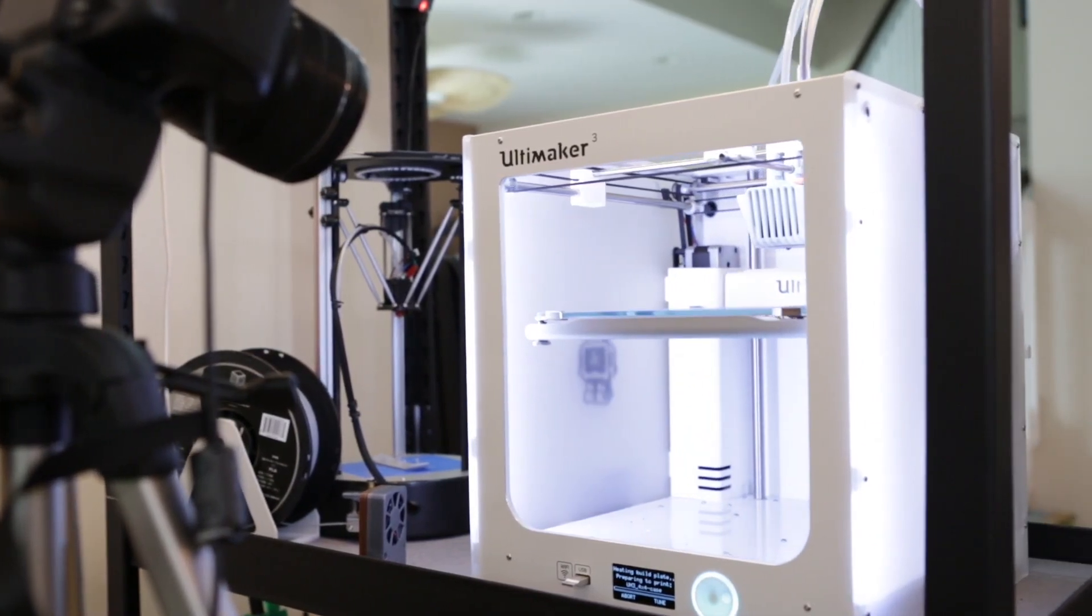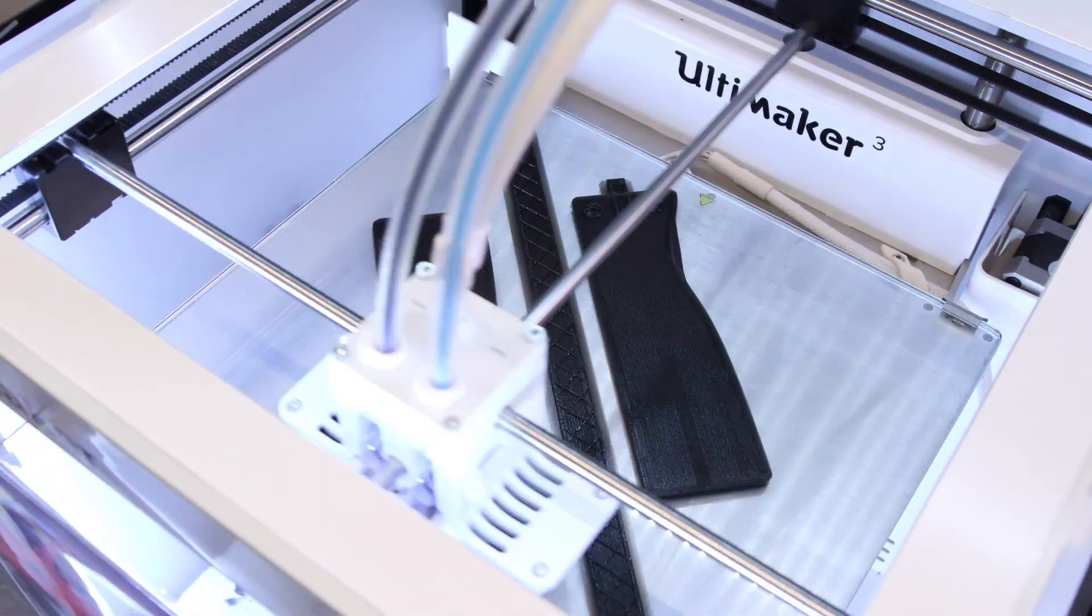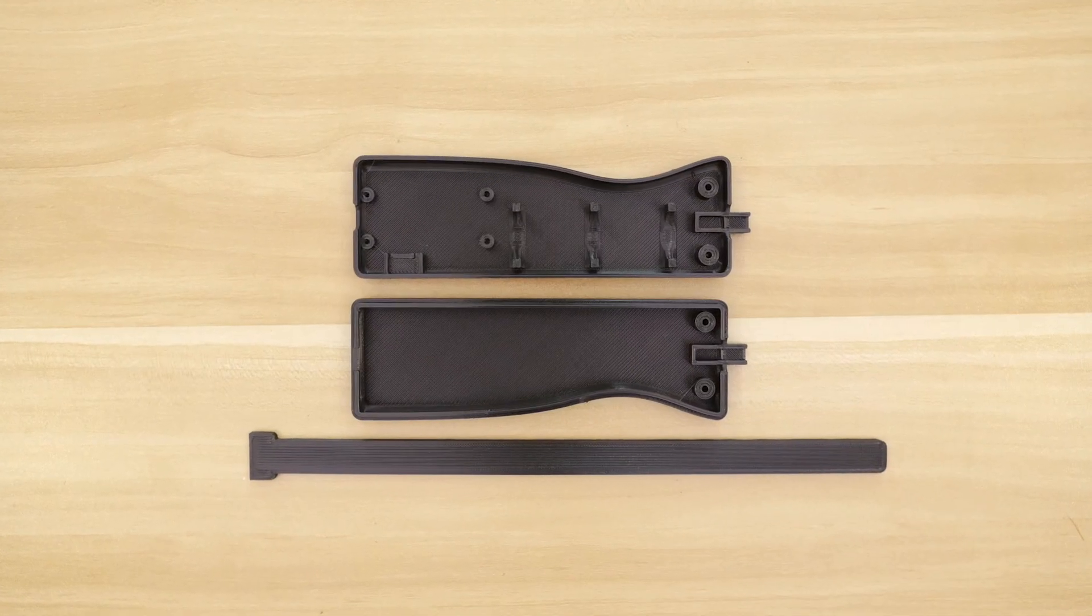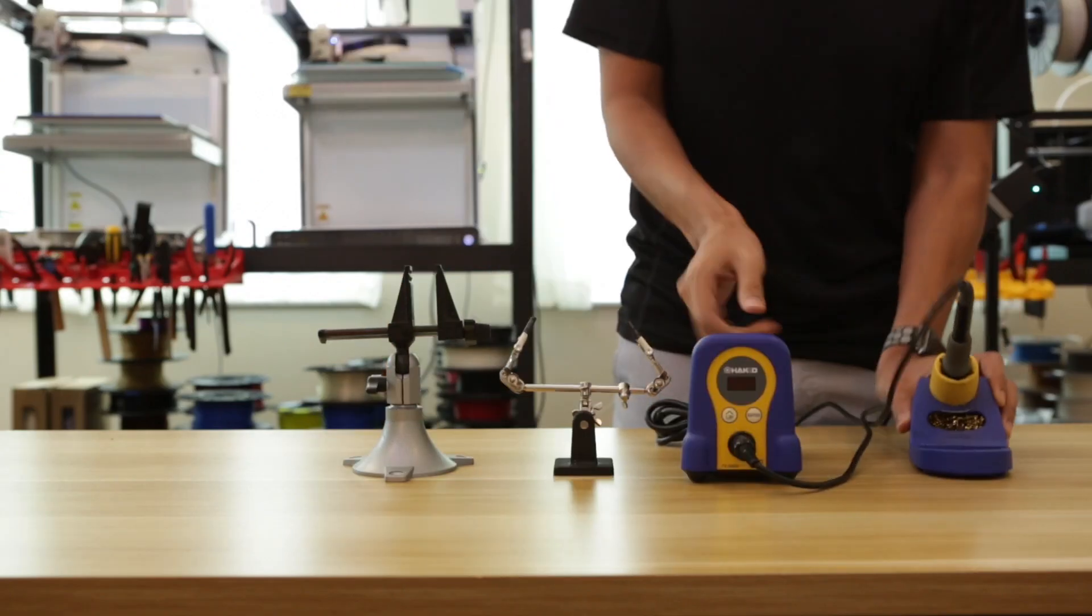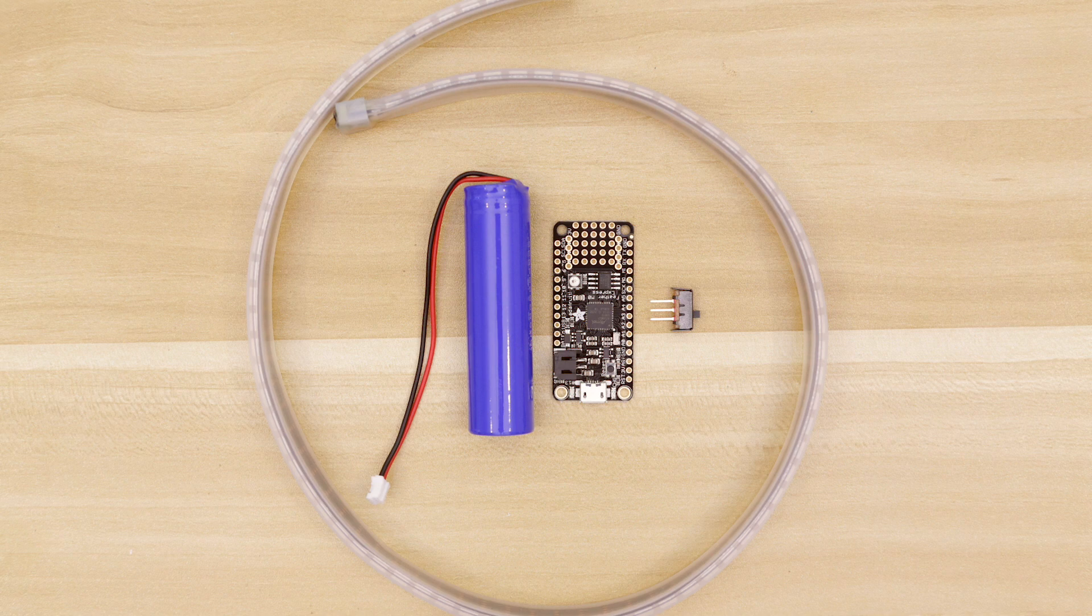The handle and wand were designed to be 3D printed and houses all of the electronics. You'll need a few tools to build this project, which you can find in our learning guide.